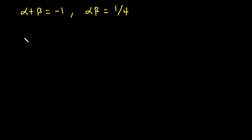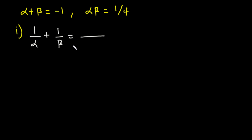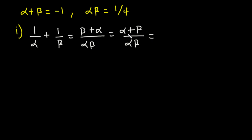To solve part (i): 1 over alpha plus 1 over beta. The LCM between alpha and beta is alpha beta. Dividing alpha beta by alpha gives beta, and dividing by beta gives alpha, so we get alpha plus beta all over alpha beta. Alpha plus beta is negative 1 and alpha beta is 1 over 4, so this equals negative 1 times 4 over 1, which is negative 4.